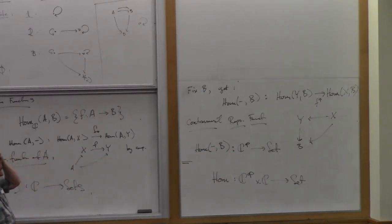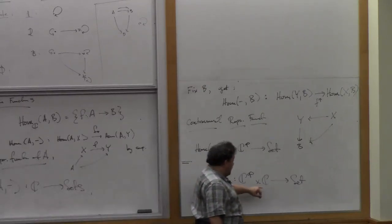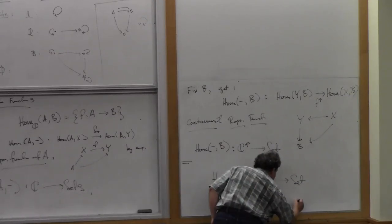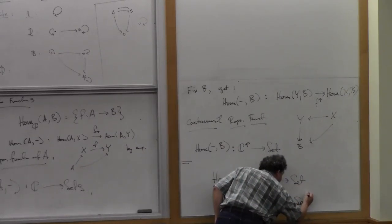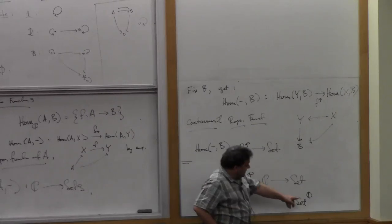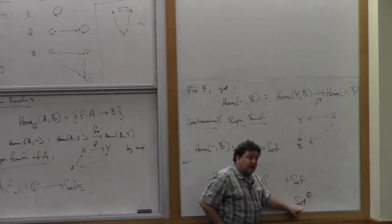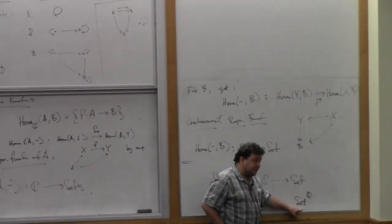And later on, when we have a little bit more information, we're going to start looking at things of the form Set^C, the functor category, the objects of which are functors from C into set. The arrows, we have to determine, those are called natural transformations.